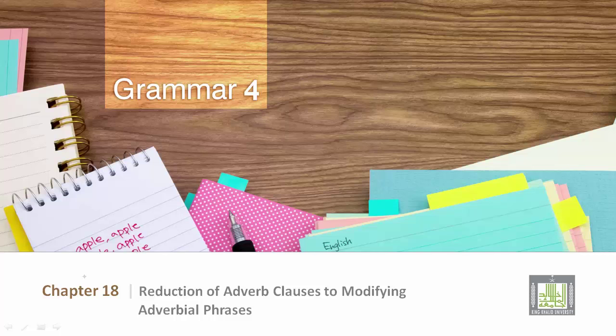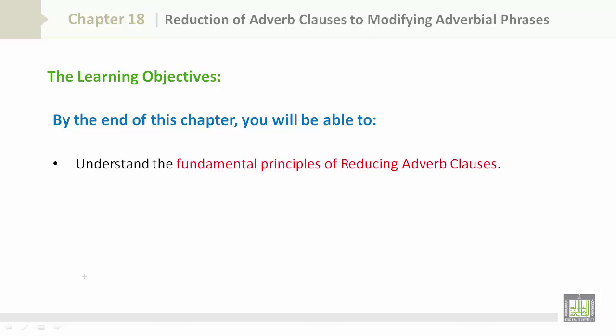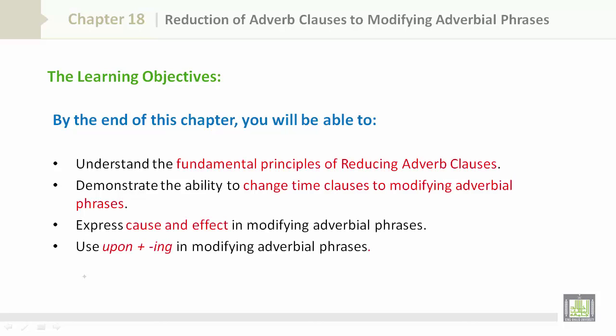Grammar 4, Chapter 18: Reduction of Adverb Clauses to Modifying Adverbial Phrases. The learning objectives: by the end of this chapter, you will be able to understand the fundamental principles of reducing adverb clauses, demonstrate the ability to change time clauses to modifying adverbial phrases, express cause and effect in modifying adverbial phrases, and use 'upon plus -ing' in modifying adverbial phrases.